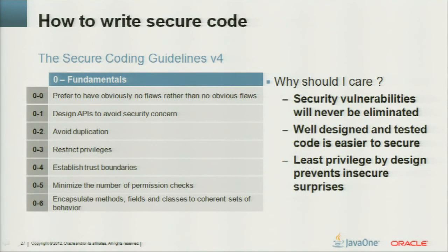The first chapter: fundamentals. Prefer to have 'obviously no flaws' rather than 'no obvious flaws' — this is our meta rule. Design APIs to avoid security concerns. Avoid duplication. Restrict privileges. Establish trust boundaries. Minimize the number of permission checks. And encapsulate.